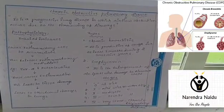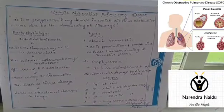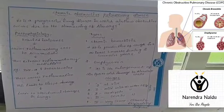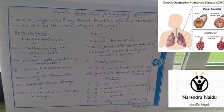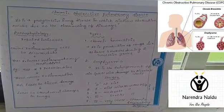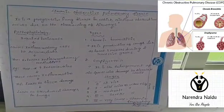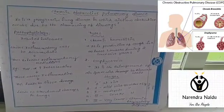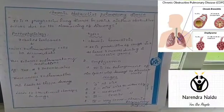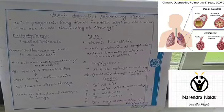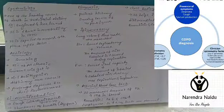COPD is classified into five stages: Stage 0 — the patient is at risk; Stage 1 — mild risk; Stage 2 — moderate risk; Stage 3 — severe risk; and Stage 4 — very severe risk, also known as chronic respiratory failure.